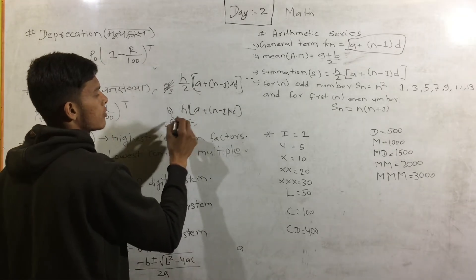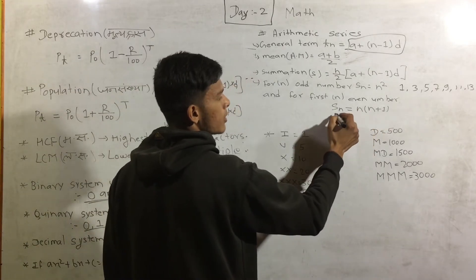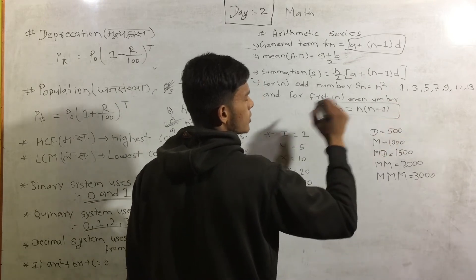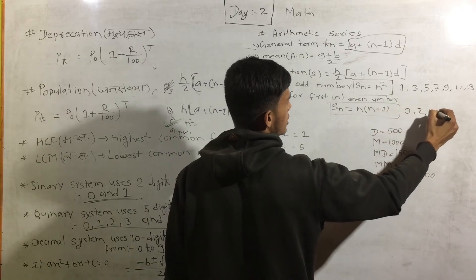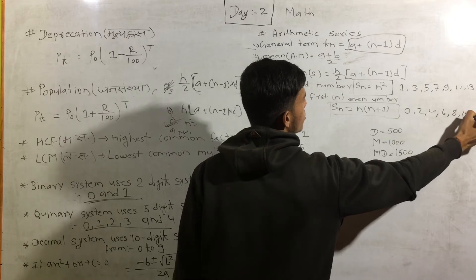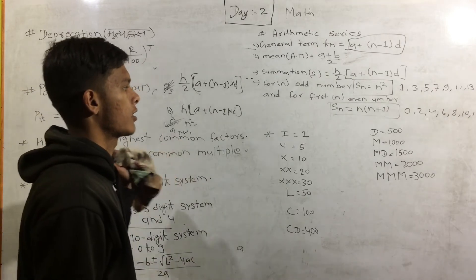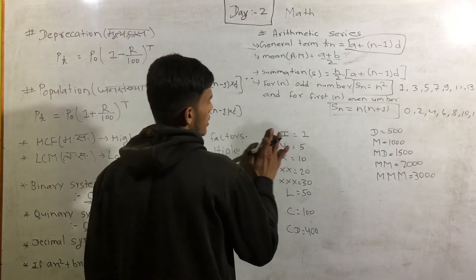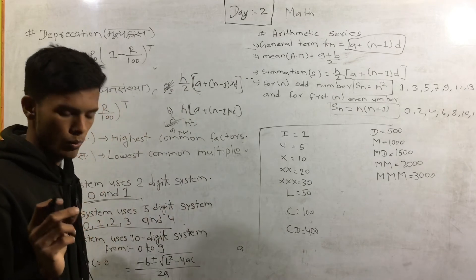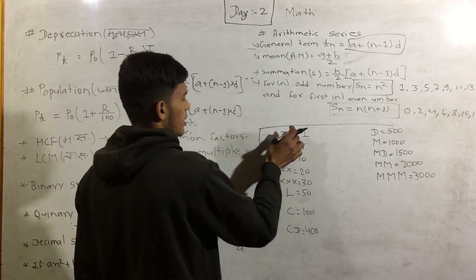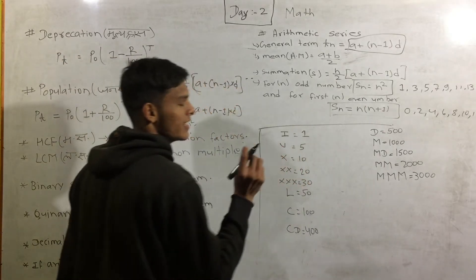We will write u for n squared. So we will write u into (n plus 1). I will write u in n squared. Now we have to write this: 1, 2, 3, 4 — this value is 1. We also have e to N and e to N plus 1.